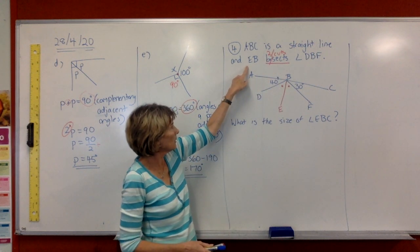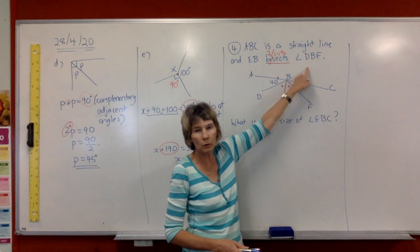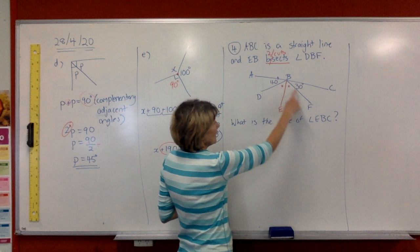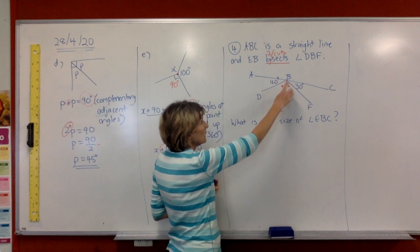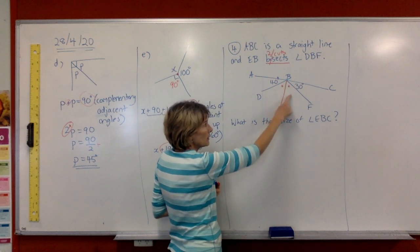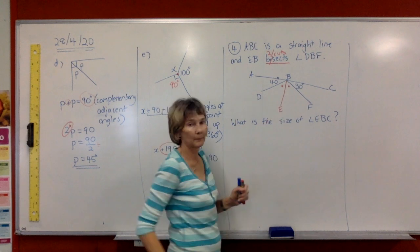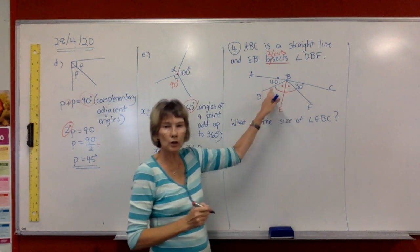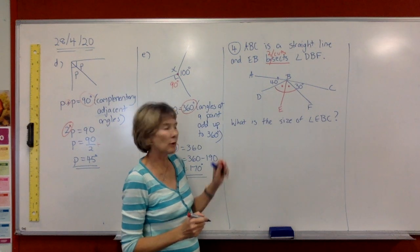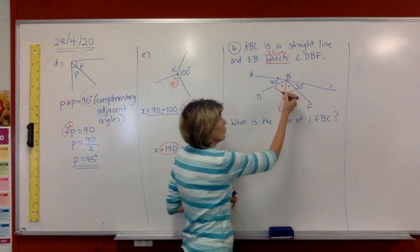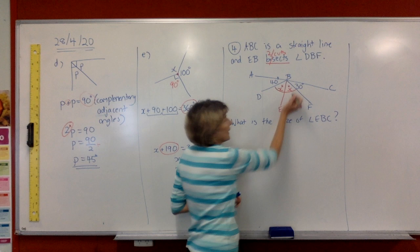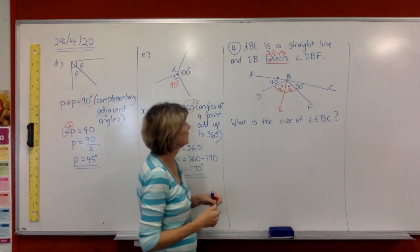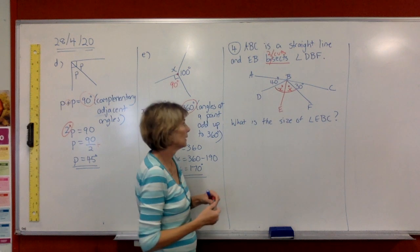So the line EB has to cut the angle into two equal angles. So here's our angle DBF. And our line BE is going to cut it into two equal bits. So that whole angle has been split into two equal sections. So I've got two dots there, but we could call them X and X or any letter if you like, just make them the same because those angles are the same.